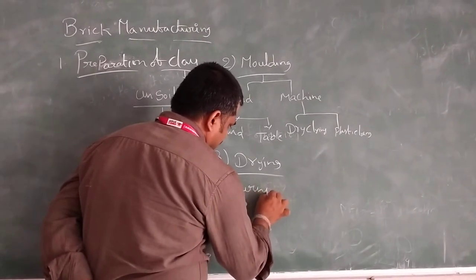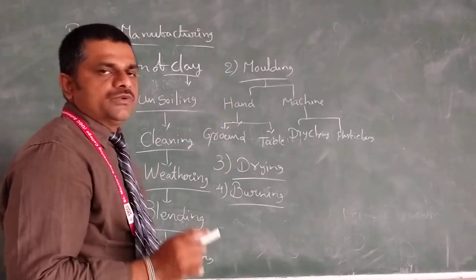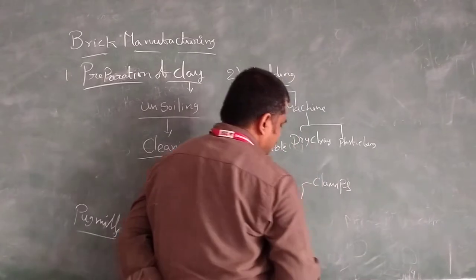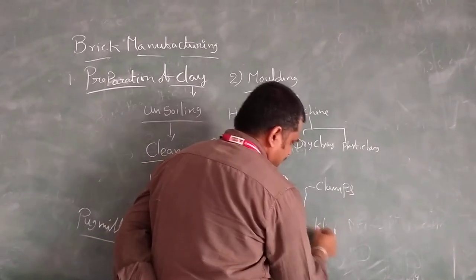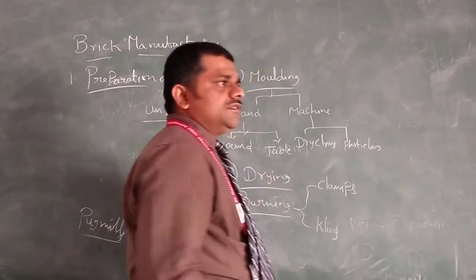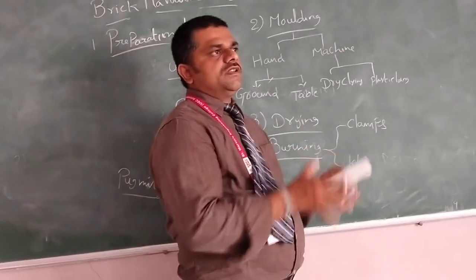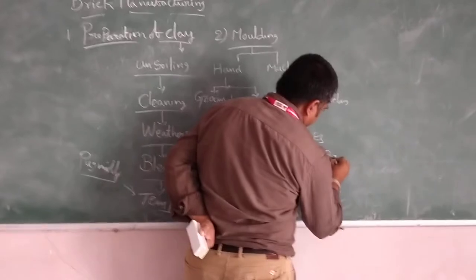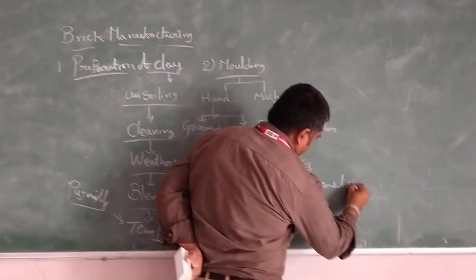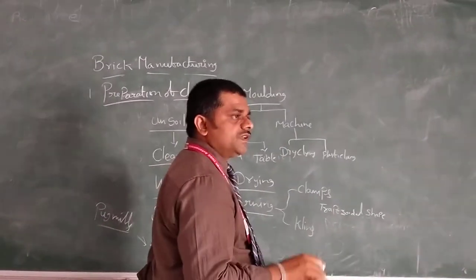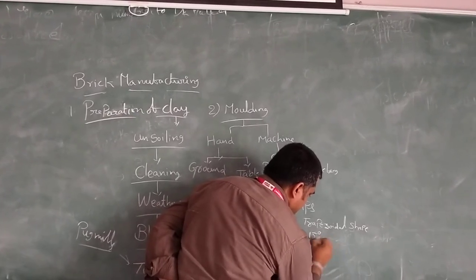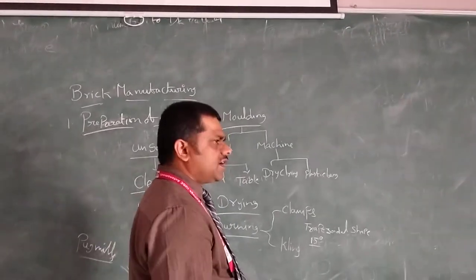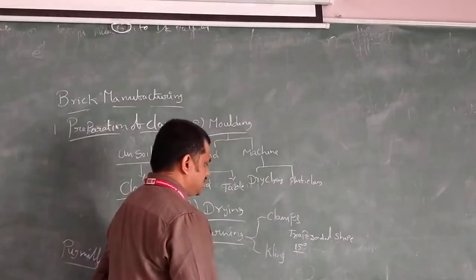And fourth one is burning. Burning is generally of two type systems. First one is kilns, second one is clamps. What are the molds is there, brick molds, we have to put in the trapezoidal shape. The ground should be fifteen degrees temperature because of the heat. Generally moisture is there, that is the reason. Fifteen degrees temperature. Before that, we have to do some burning.